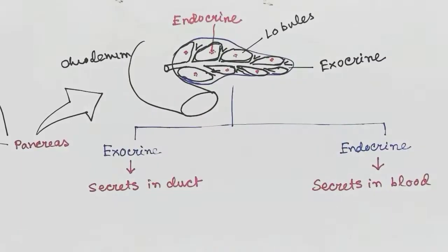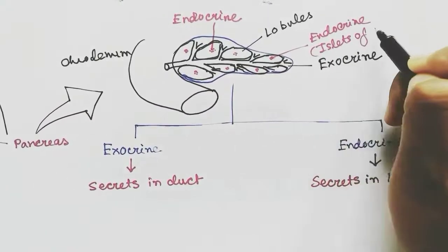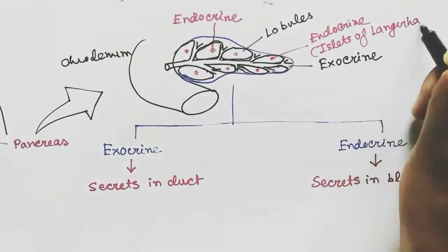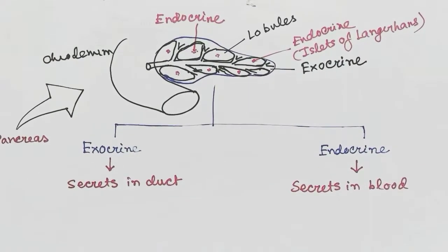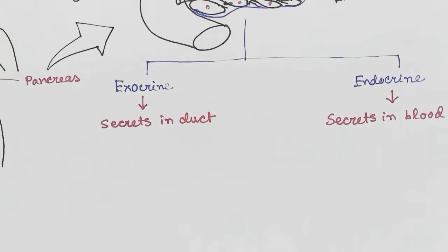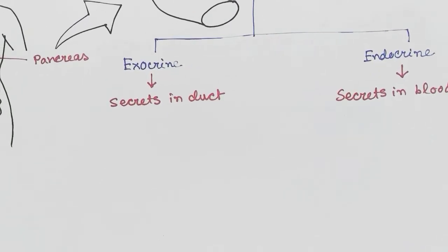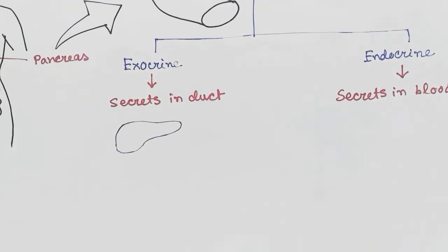These islet-like structures are also called islets of Langerhans. They are lightly stained. Now starting with the exocrine part of the pancreas and the exocrine ducts forming the lobules.